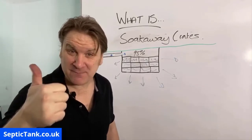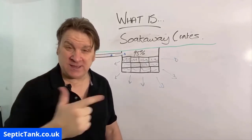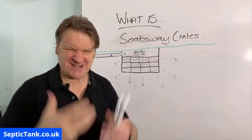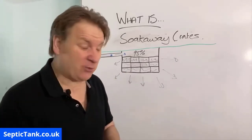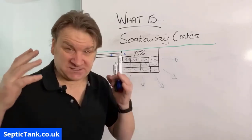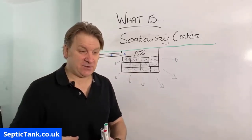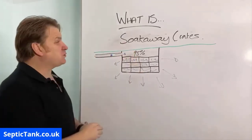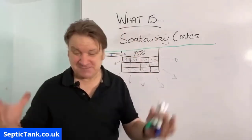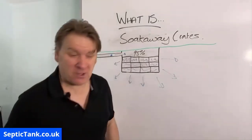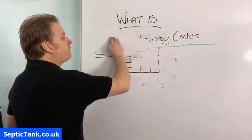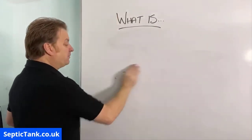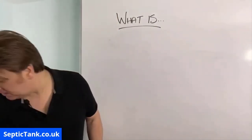So those are basically all the different types of sewage systems: a cesspool — sealed unit; a septic tank — inlet and outlet pipe; a sewage treatment plant — turns stinky sewage into clean water; and soak aways — pits, herringbone pipe systems, and soak away crates. That's the whole spectrum of off-mains sewage systems and how they work.